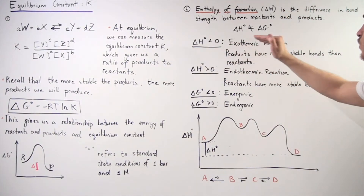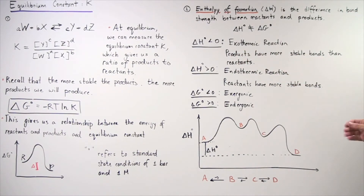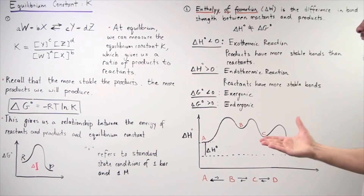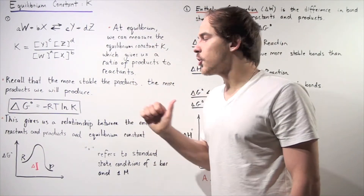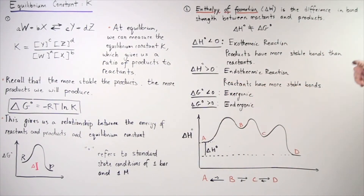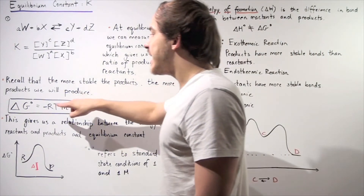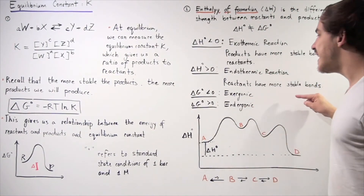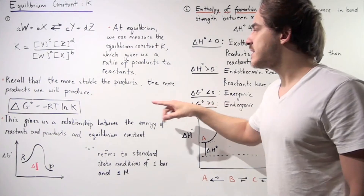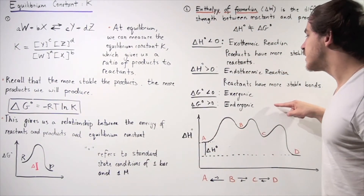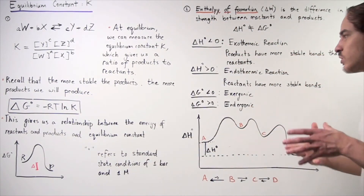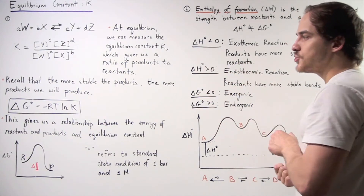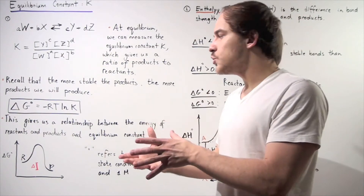A negative ΔH refers to an exothermic reaction where the products have more stable bonds than reactants. When ΔH is positive, we have an endothermic reaction and the reactants are more stable. Note that when we have a negative change in Gibbs free energy, that's not exothermic — that's an exergonic reaction. For a positive change in Gibbs free energy, we call it endergonic. The exact relationship between ΔG and ΔH will be discussed in a future lecture, but you should know these two things are not the same.